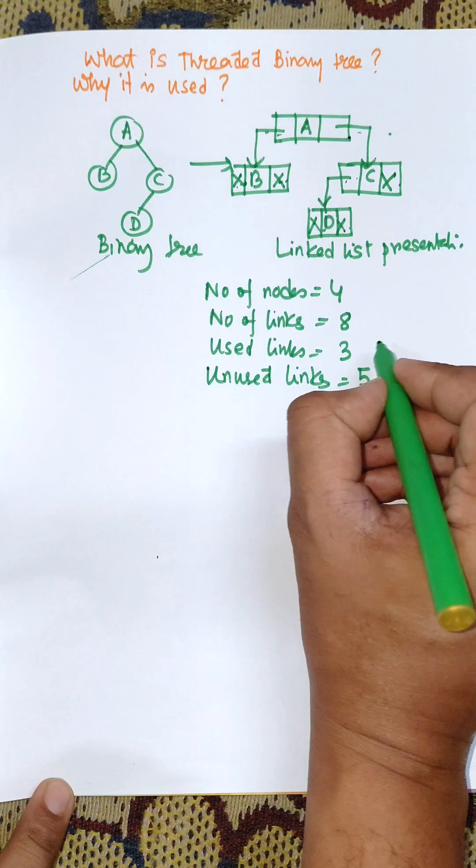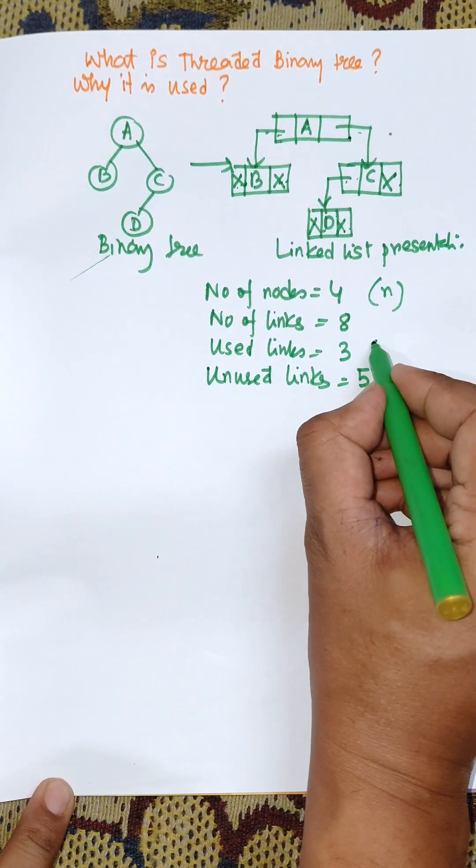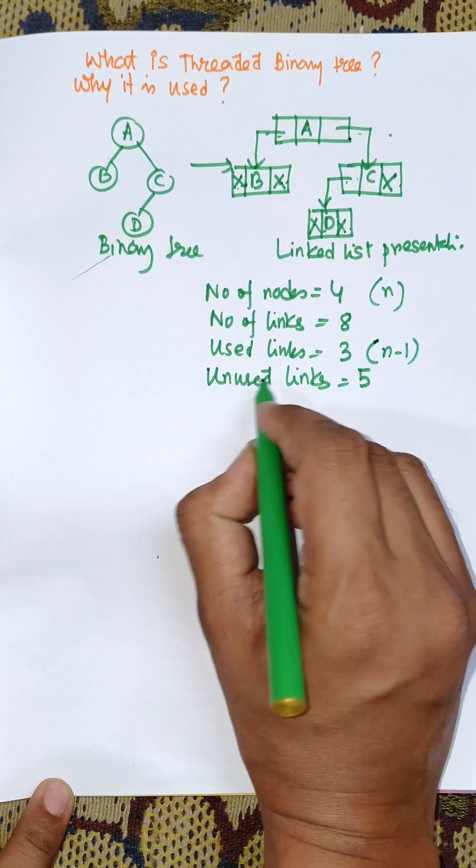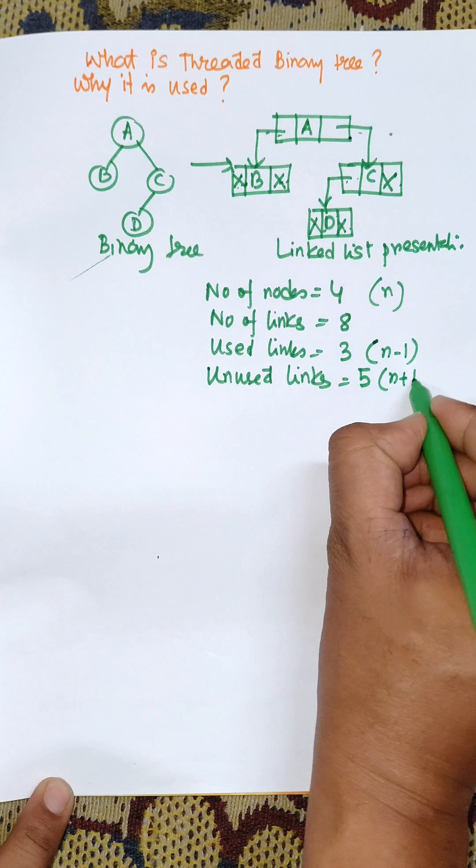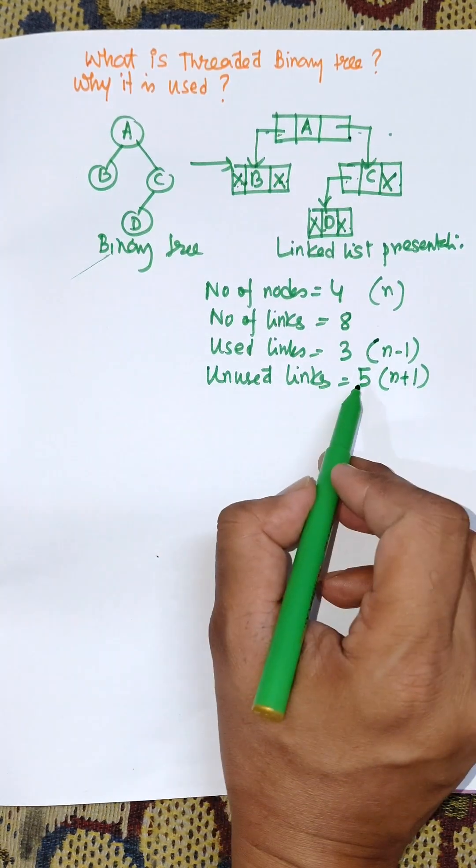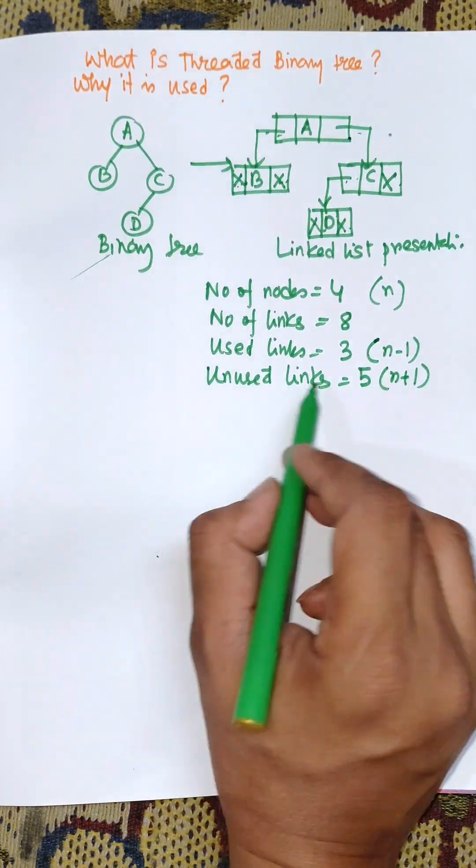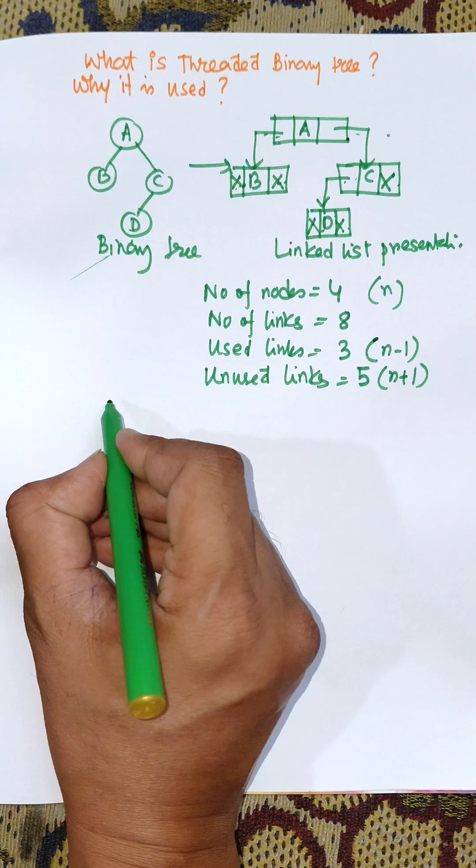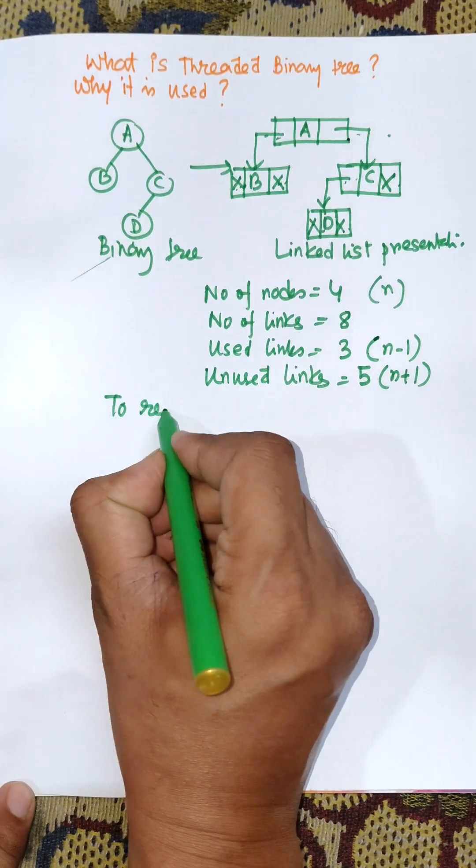If N is the number of nodes, that means used links is N minus 1, and unused links is N plus 1. Half of the links are unused which are pointed by null. To remove this wastage of memory, we need special pointers.